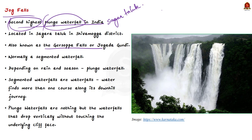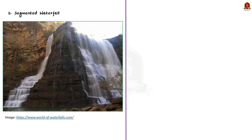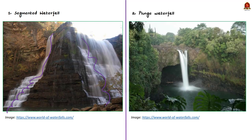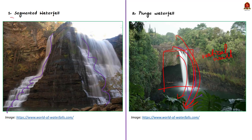Jog Falls is normally a segmented waterfall but becomes a plunge waterfall depending on rain and season. Segmented waterfalls have water flowing in more than one course, while plunge waterfalls drop vertically without touching the underlying cliff face — dropping directly down without streaming on rocks.